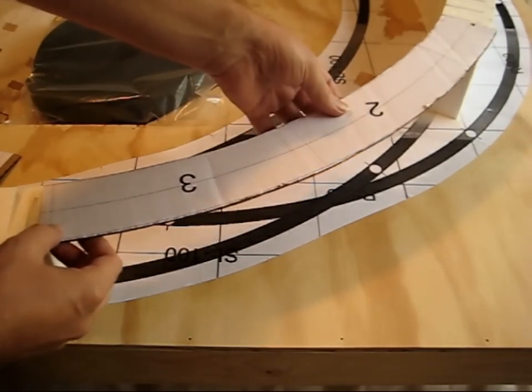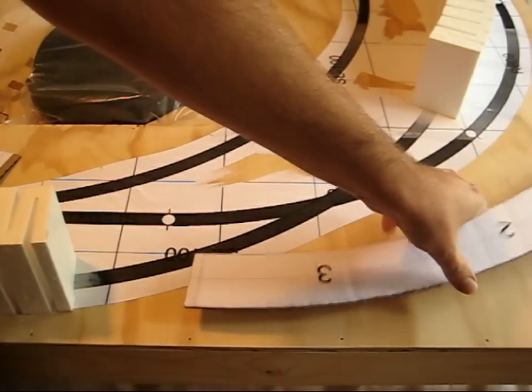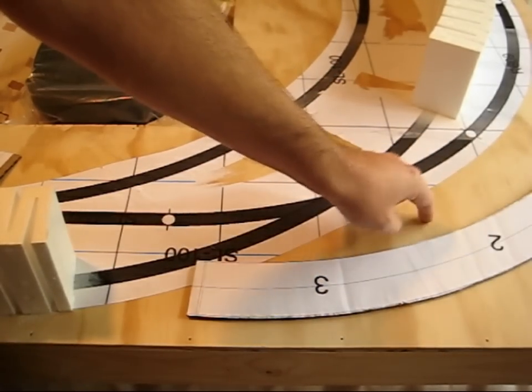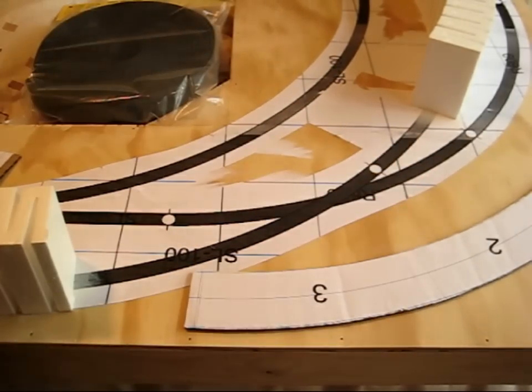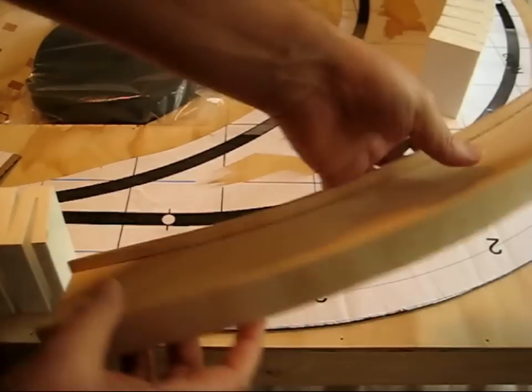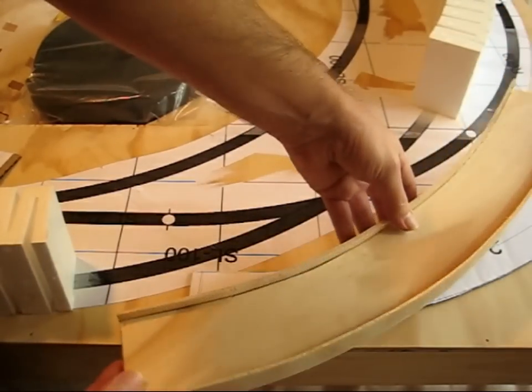So I then took this template and marked it out on some plywood. I had some leftover plywood from the top here and cut out the bridge radius.